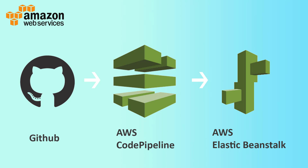Let's take a high-level look at what our deployment pipeline is going to look like. First, we'll be using a sample Node.js application located in a GitHub repository. We'll set up our pipeline so that whenever we commit any changes to our application in GitHub, it'll trigger our AWS CodePipeline instance to kick in and start the deployment process. Finally, CodePipeline will deploy our application to AWS Elastic Beanstalk, which means our code will live on EC2 instances behind the scenes. It's a simple one-stage build pipeline, and in future tutorials we'll add a build stage and possibly other stages.